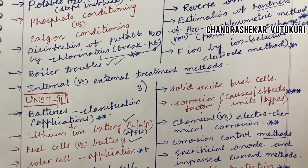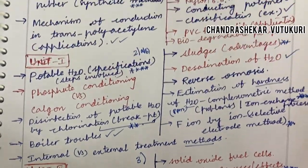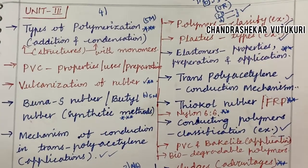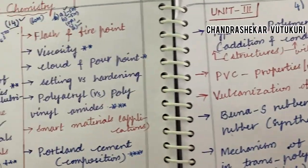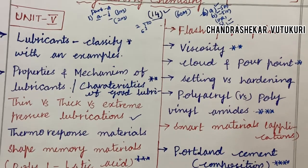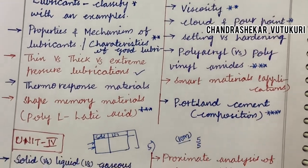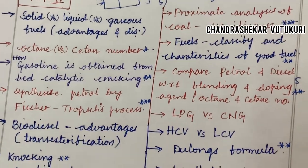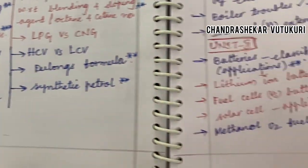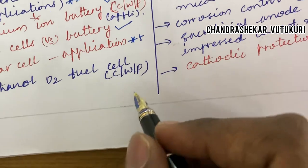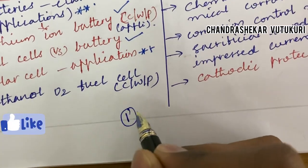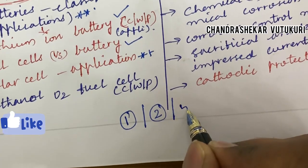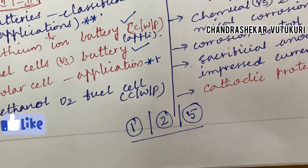Dear students, I haven't highlighted separate short questions. If you are perfect with all the questions where I have made a star mark on the paper, you are supposed to work them out in both long and short form. There is no separate preparation needed for short questions — if you are thorough with all the concepts I have highlighted, you will be able to answer both short and long questions. I am going to let you know which units to focus on if you are an average student.